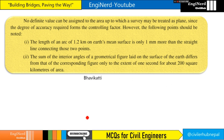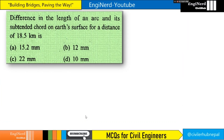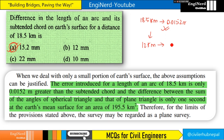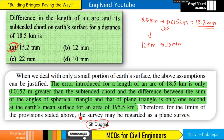Next, this is a question: the difference in the length of an arc and its subtended chord on the earth's surface for a distance of 18.5 kilometers. The answer is 15.2 mm. When we deal with only a small portion of the earth's surface, for 18.5 kilometers the answer is 0.0152 meters, which is equivalent to 15.2 mm.